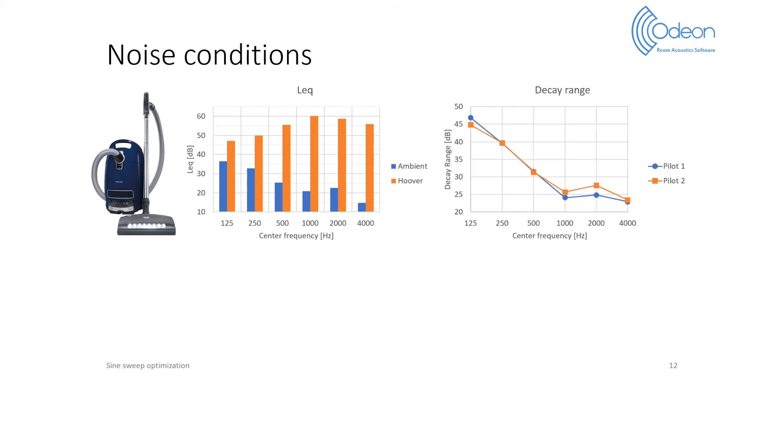We measure two pilot impulse responses with the hoover on, and this next graph shows the measured decay range per octave band for these pilots. A first observation is that up to 2 kHz, the decay range agrees well with the measured background noise, where higher noise floors lead to lower decay ranges.